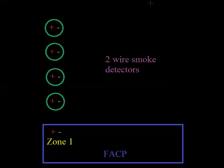They still are connected to the zone the same way the other devices are, but when they go into alarm, when two-wire smoke detectors go into alarm, they don't directly short out the panel.